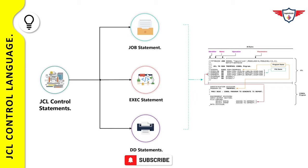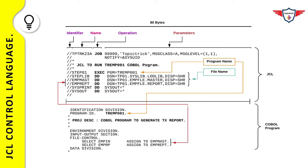Let's understand what we've discussed with an example. On the right-hand side of your screen, you have a sample JCL that executes the program TREMP001. The first two lines are the job card, used to specify information related to the shop. The next three lines are comments indicating what the JCL is doing — specifically, JCL to run the TREMP001 COBOL program. After that, you have an execute statement marking the beginning of a job step, with step name STEP01 and EXEC PGM=TREMP001, which is the name of the COBOL program.